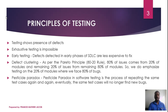The next principle is the Pesticide Paradox. In real-time, pesticides are used in agriculture fields. If you use the same pesticide repeatedly, pests can overcome it. The same concept applies to software testing — if you run the same test cases repeatedly, you have to change the test cases periodically. That is the Pesticide Paradox.